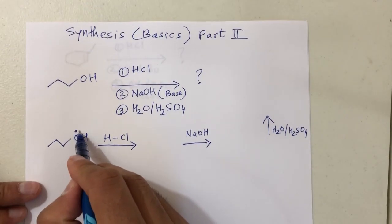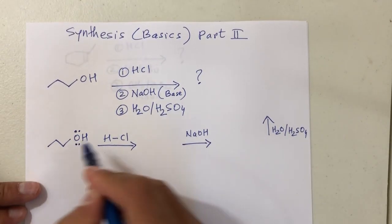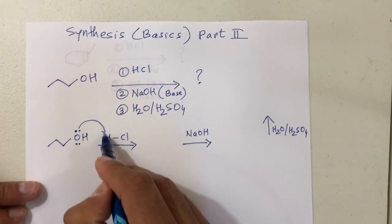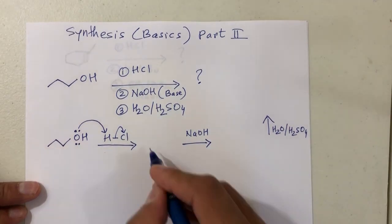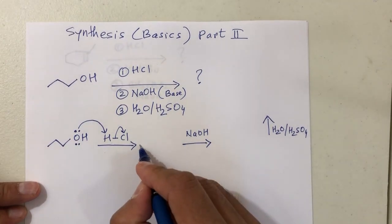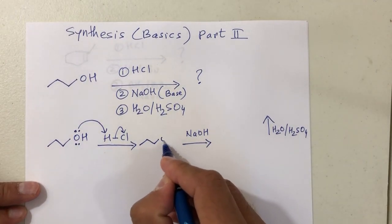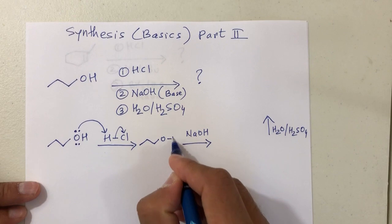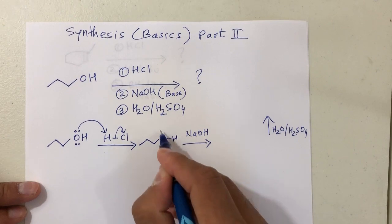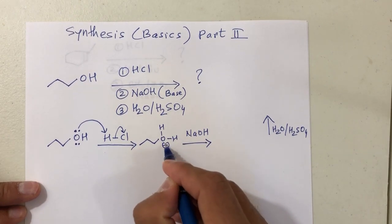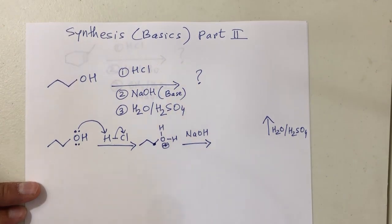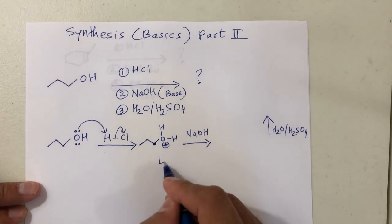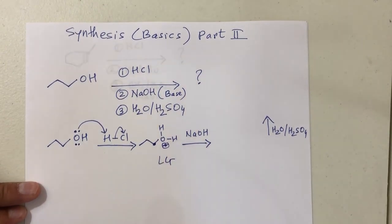Acid-base: this is your base and HCl is the acid. So there will be an acid-base reaction, and that will become OH2+. So that's your leaving group — the carbon now has a leaving group, OH2+ is a leaving group here.